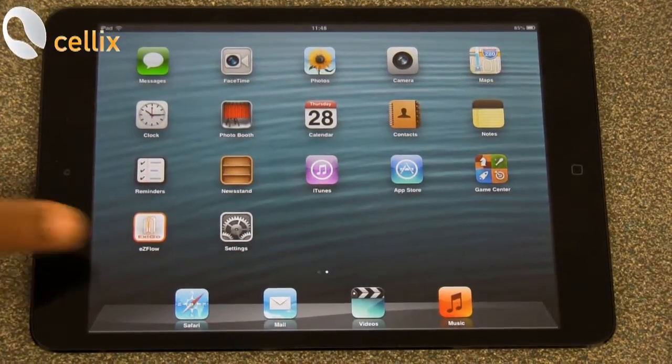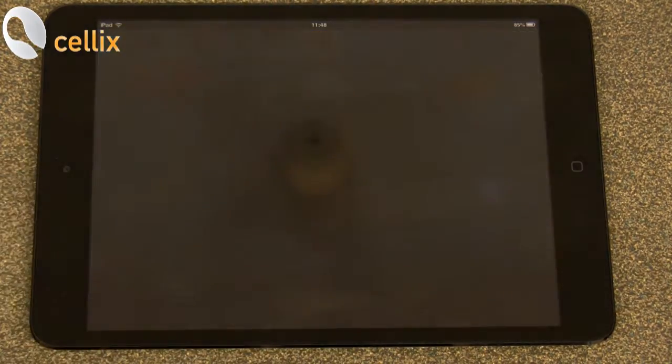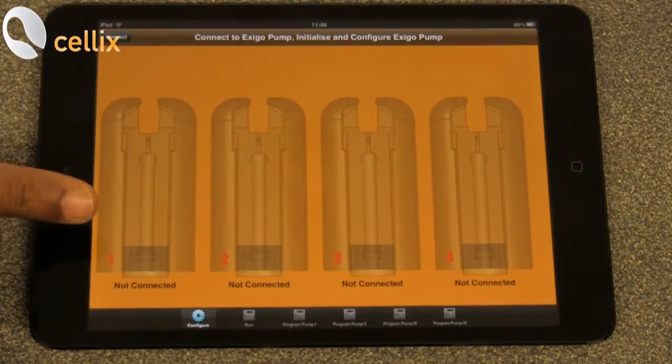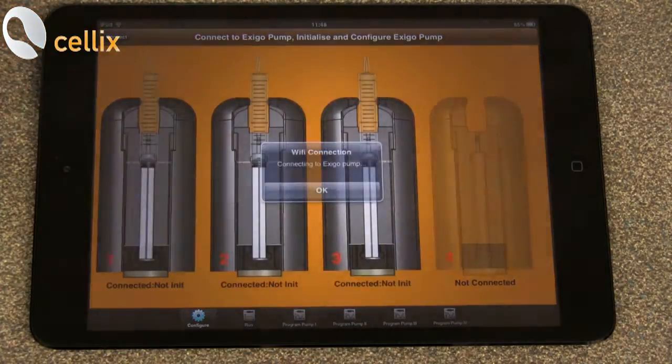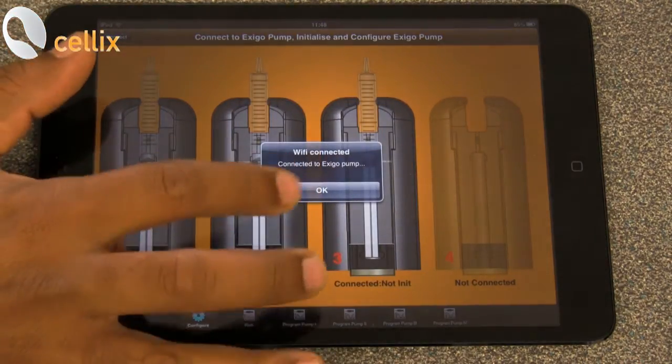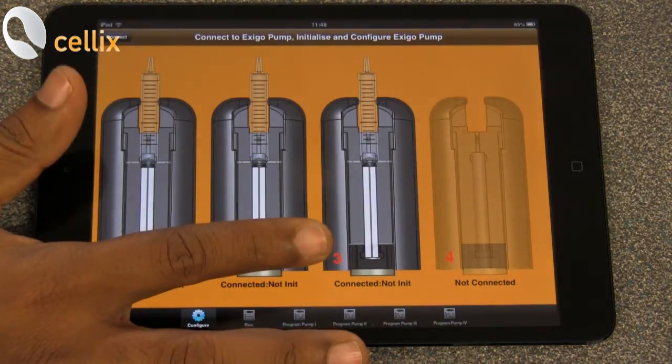To go to the app, you can see this Exigo app. You click that and it opens the program. On the left-hand corner, you have this connect option. You click connect, click OK. So now you have all three pumps detected.